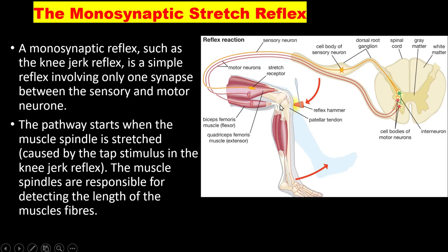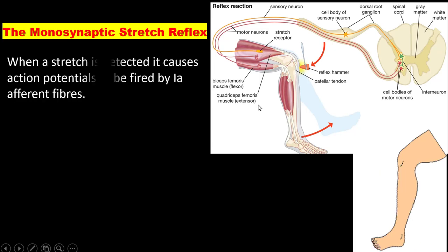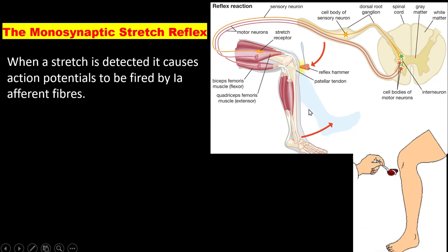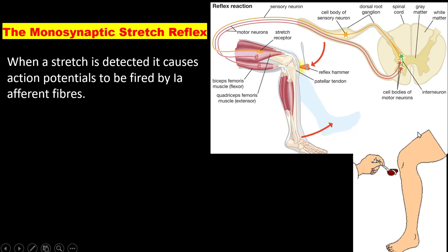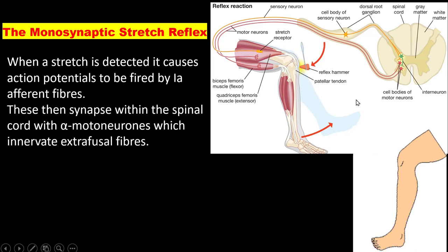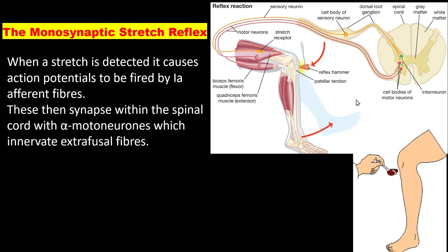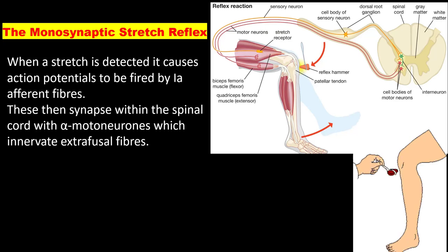The antagonistic muscle is inhibited and the agonist muscle contracts. In the knee jerk reflex, the quadriceps contract and the hamstring relax. When the knee is tapped, the muscle spindle is activated and the stretch reflex occurs at the level of the knee joint, causing the quadriceps muscles to contract and the hamstring muscles to relax.